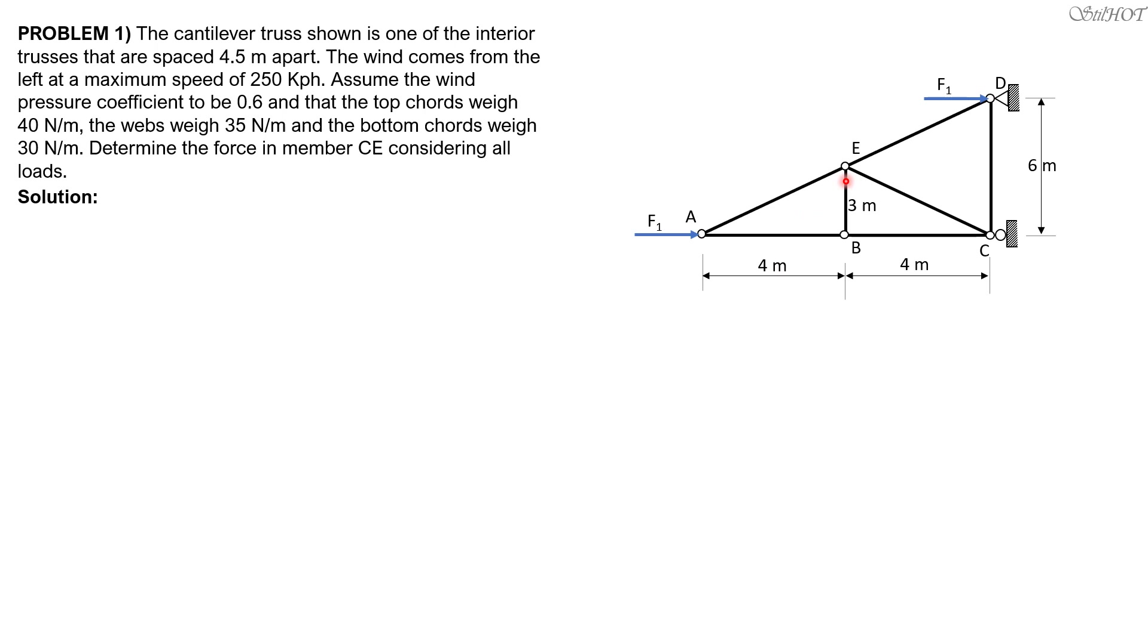The tributary area for this center joint is double the tributary area of the end joints. So the pressure is 0.0473 times velocity squared in Pascals divided by 1000 to make it kilopascals, so 2.956 kilopascals.